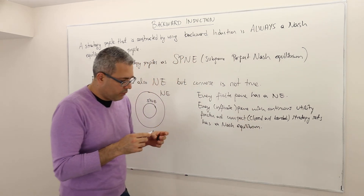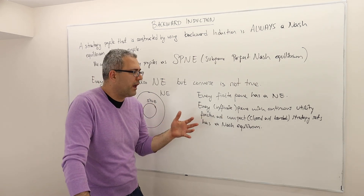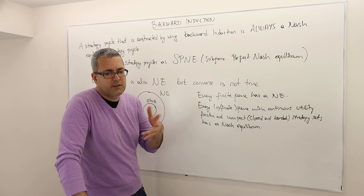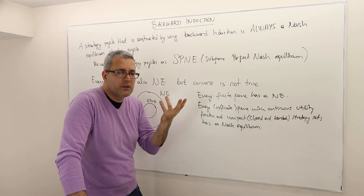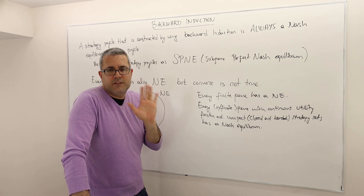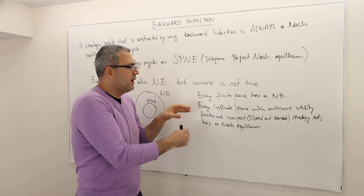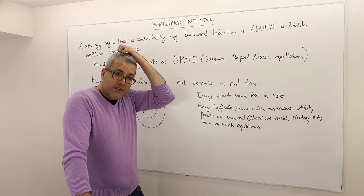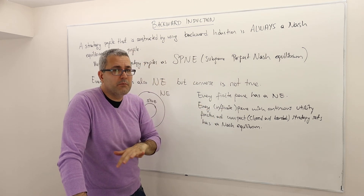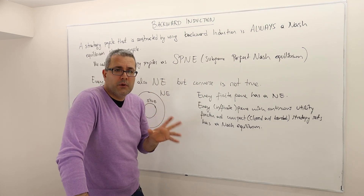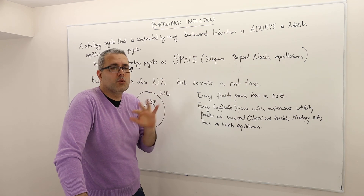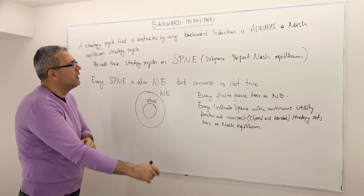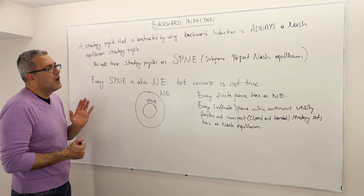We can make these results stronger by relaxing the compactness assumption if we add stronger conditions on other things, like convexity of strategy sets, concavity of utility functions, or boundedness of utility functions. The bottom line is that almost all games we consider have a Nash equilibrium — in pure or mixed strategies. Games without a Nash equilibrium, such as those with discontinuous utility functions or unusual domains, are exceptions outside the scope of this course.